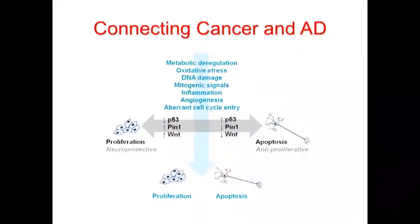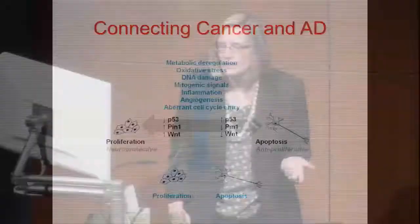What I'm most excited about is the vertical connection, where you have all of these very familiar pathophysiologic elements: metabolic deregulation, oxidative stress, DNA damage, mitogenic signals, inflammation, angiogenesis, aberrant cell cycle entry. These are common to both diseases. And the key point I want to make is that these are also what happens with aging.